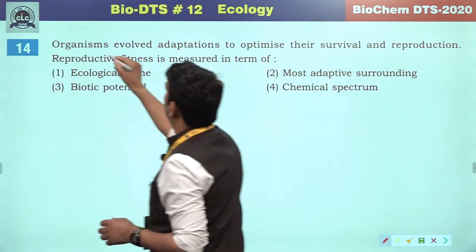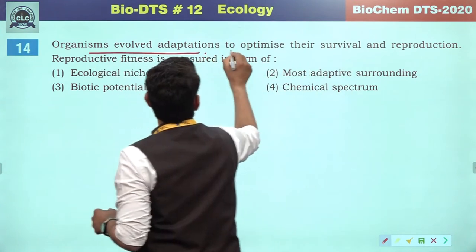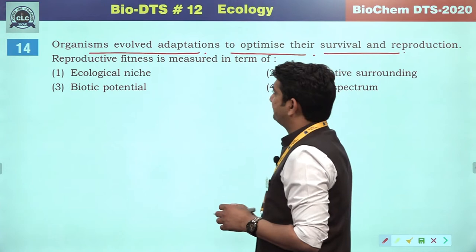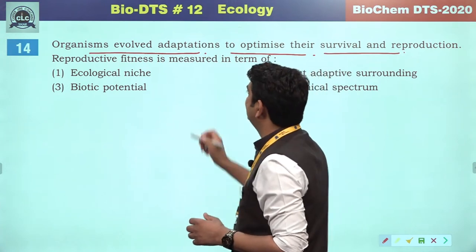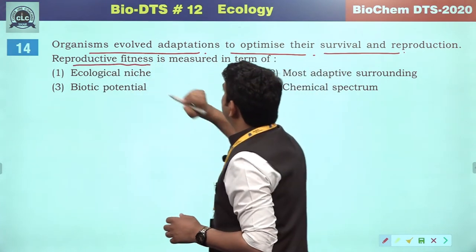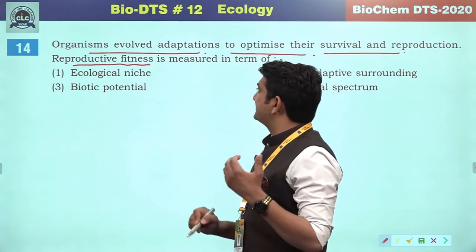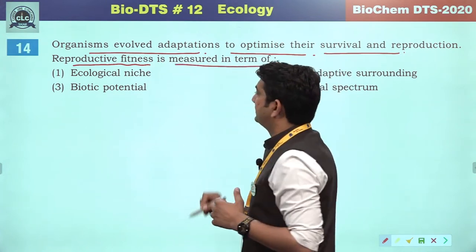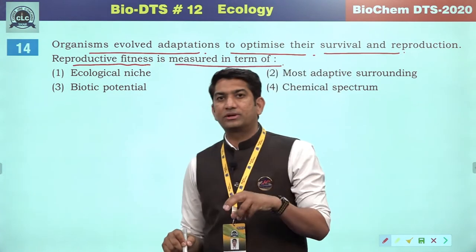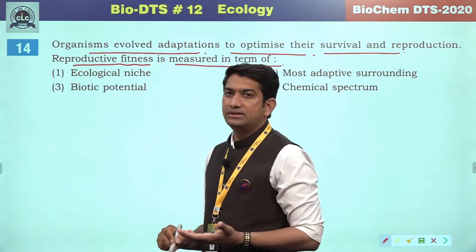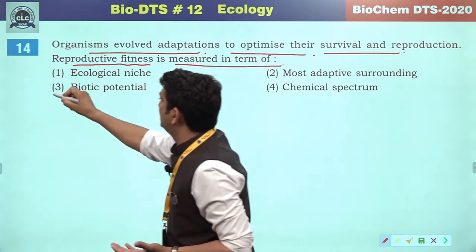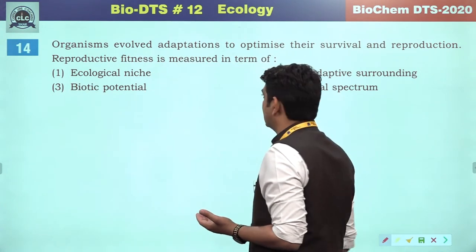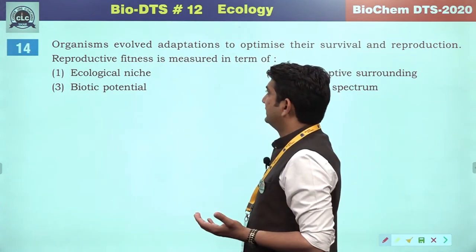Organisms evolve adaptations to optimize their survival and reproduction. Reproductive fitness is indicated here. In ecology, reproductive fitness is measured in terms of biotic potential — the third option will be the correct answer.